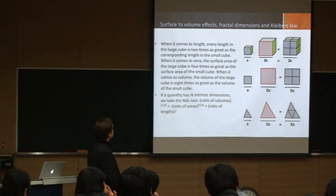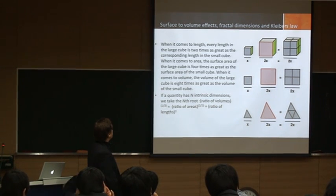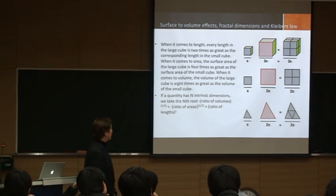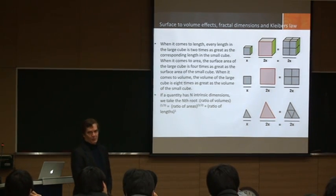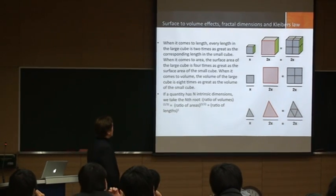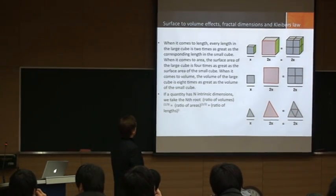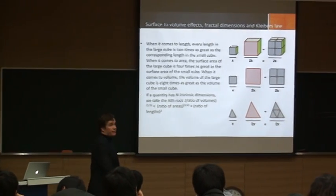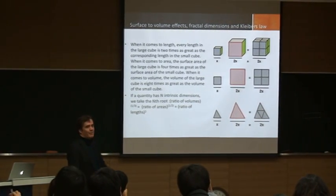The large cube on the right is two times as great as the corresponding length in the small cube. When it comes to area, the surface area of the large cube is four times.